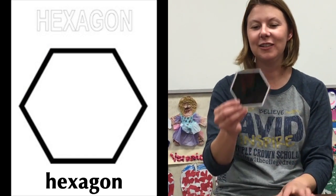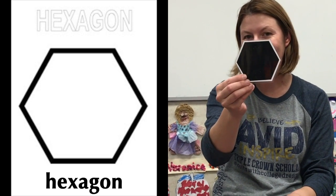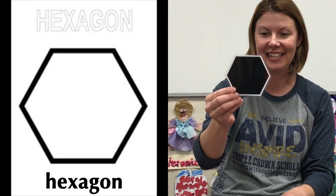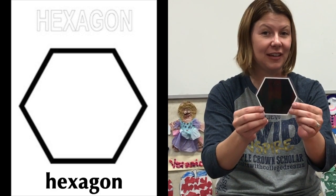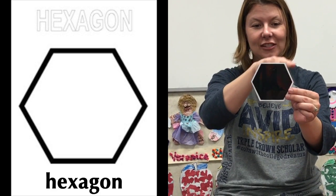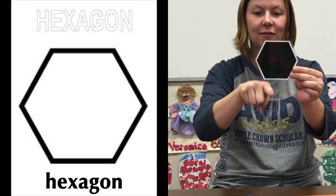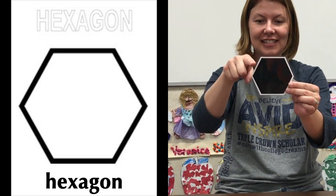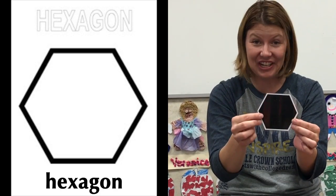Next boys and girls, we have a hexagon. Hexagons are flat. They have six sides. Let's count them with our finger. Ready? One, two, three, four, five, six. Let's say hexagon.